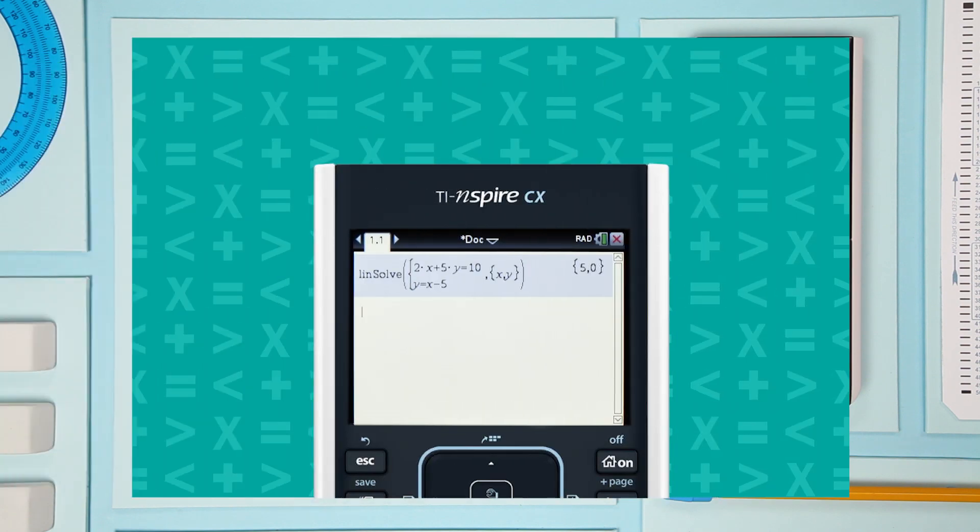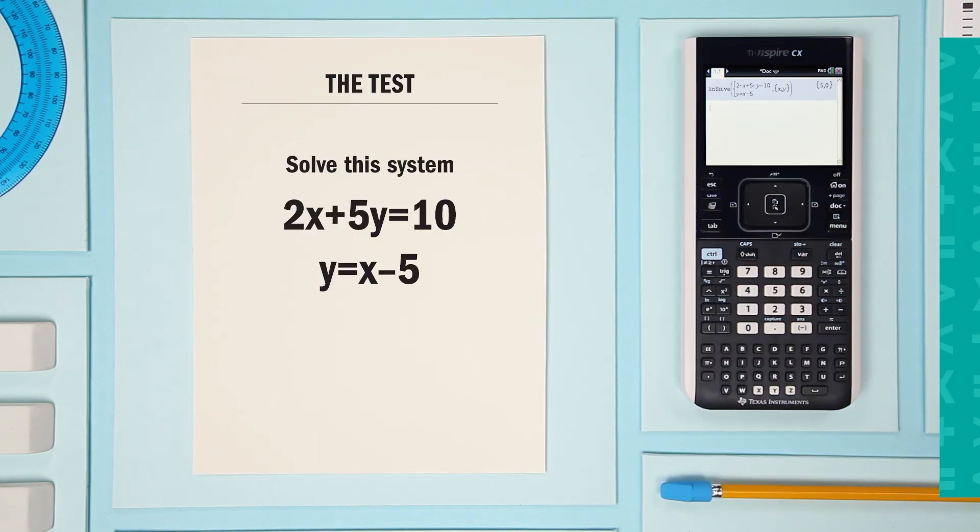The handheld shows 5, 0. Algebraically, substituting 5 for x and 0 for y into both equations would result in true statements. The solution is 5, 0, which means these lines intersect at that point.